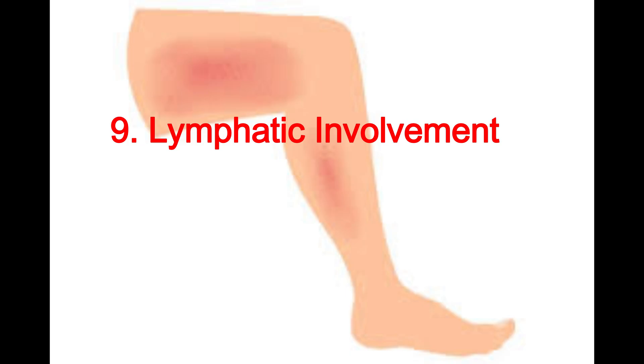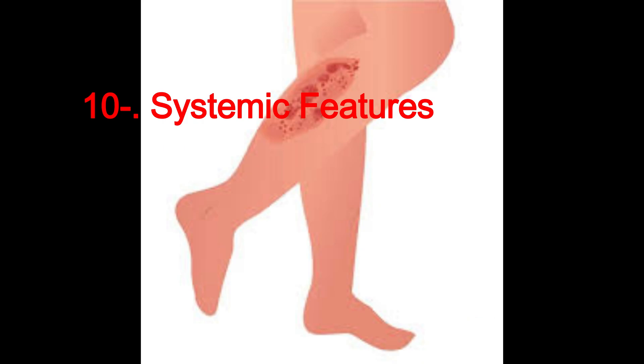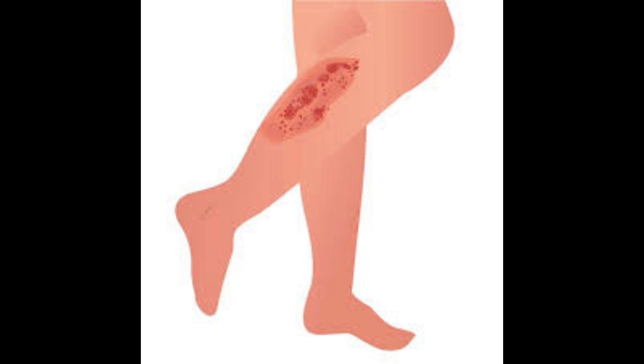Nine, lymphatic involvement. In cellulitis, lymphatic involvement is less pronounced. In erysipelas, there is prominent lymphatic involvement, leading to raised and clearly demarcated features. Ten, systemic symptoms. In cellulitis, systemic symptoms such as fever and chills are less common and less severe. In erysipelas, systemic symptoms are often prominent early on.